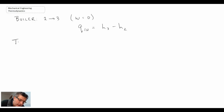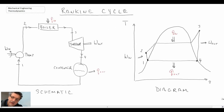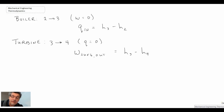The next item is the turbine, going from state three to state four. Just like the pump, we assume there is no heat transfer in the turbine — the only thing happening is work output. The work out from the turbine is quantified as the change in enthalpy of the fluid: h3 minus h4, looking at the T-S diagram. Those enthalpy values come from the superheated steam tables, assuming we end on the saturated vapor line. If we go into the two-phase region, you have to use the two-phase characteristics to get the enthalpy at state four.